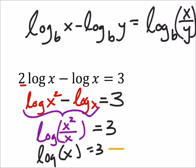And if I change this into exponential form, I get x equals 10 to the power of three, which is one thousand.